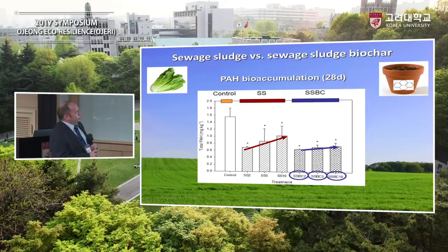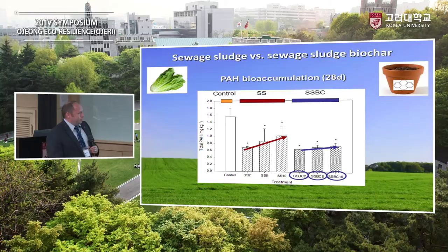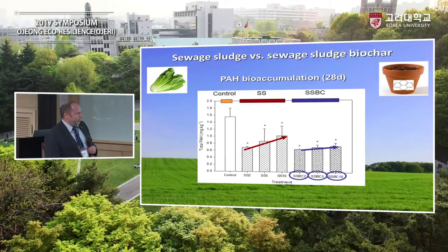If we now look at PAH accumulations — these potentially carcinogenic chemicals — we again see a fairly marked effect. The organic amendments themselves reduce PAH transfer from contaminated soil into the biomass. But as you increase the amount of sewage sludge applied, that level of PAH starts to creep up again, because the sludge itself has a PAH load. In the char-amended soil going from 2 to 5 to 10%, we see this levelling off — the PAHs have been essentially destroyed when you produce the char, so you don't see this creeping up in levels.